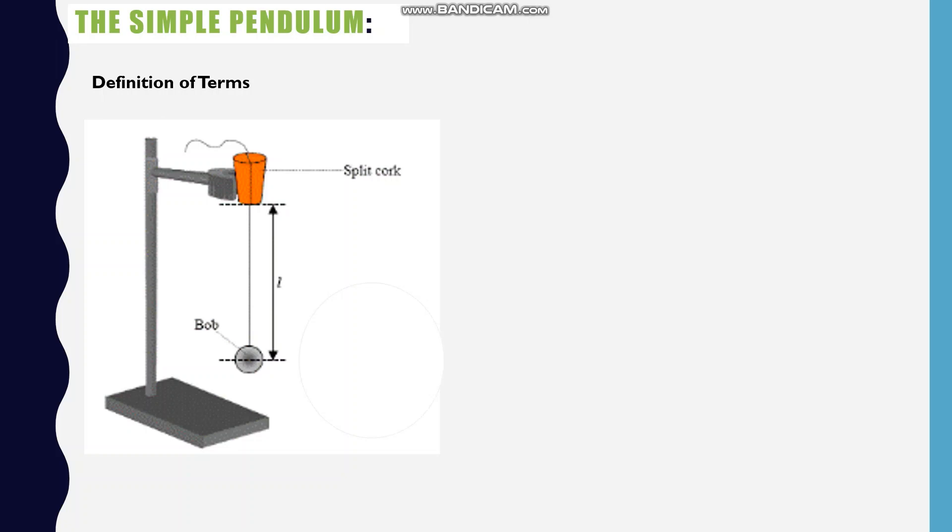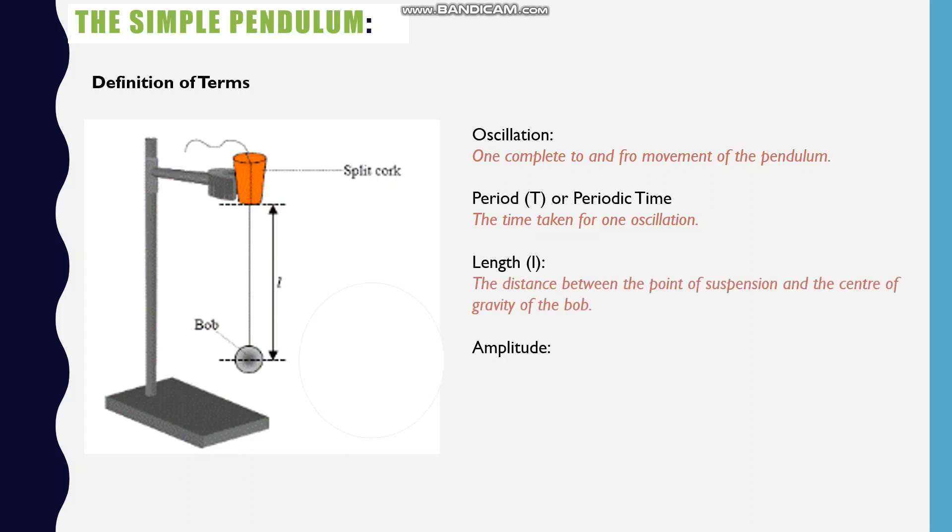Now, let's look at some of the terms that are associated with the simple pendulum. We have oscillation, period or periodic time which is indicated by capital T, length which is indicated by lowercase l, and amplitude. The oscillation is one complete to and fro movement of the pendulum. The period is the time taken for one oscillation.